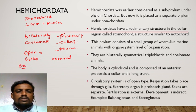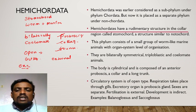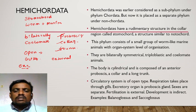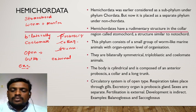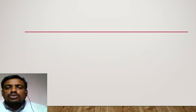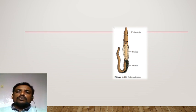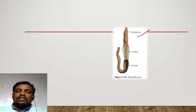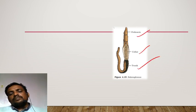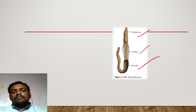Two examples of Hemichordata are Balanoglossus and Saccoglossus. Looking at the example, you can see the anterior proboscis, the collar region, and the trunk region clearly.